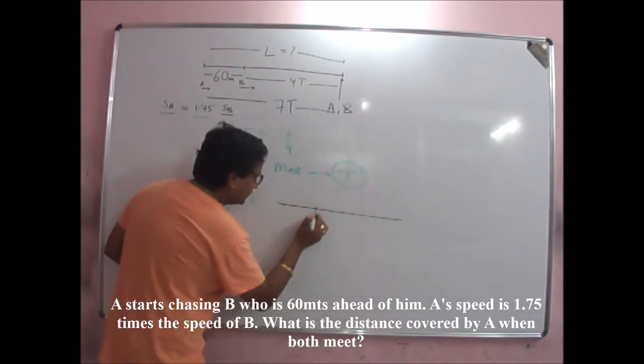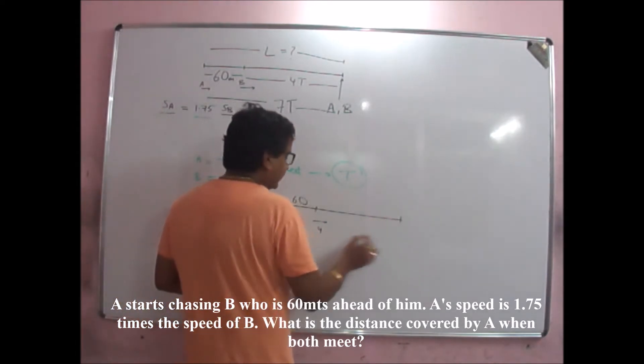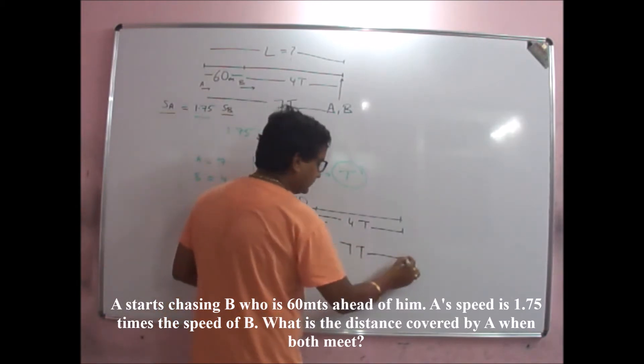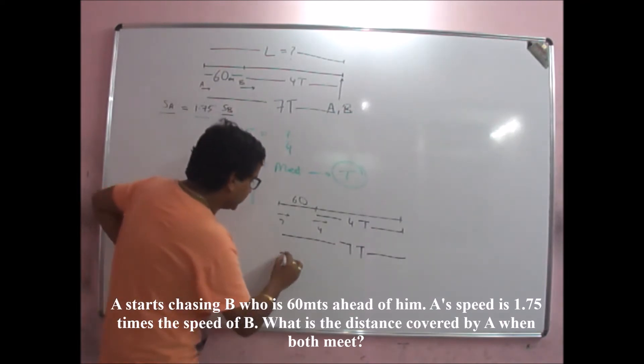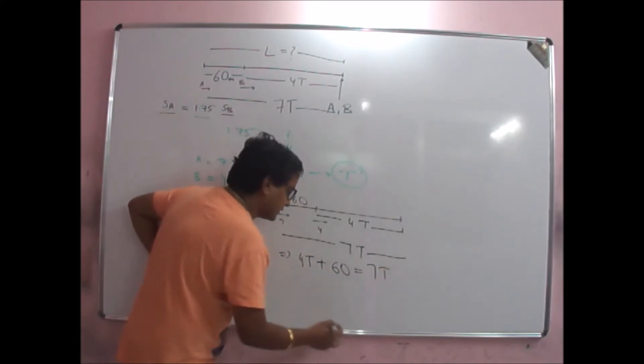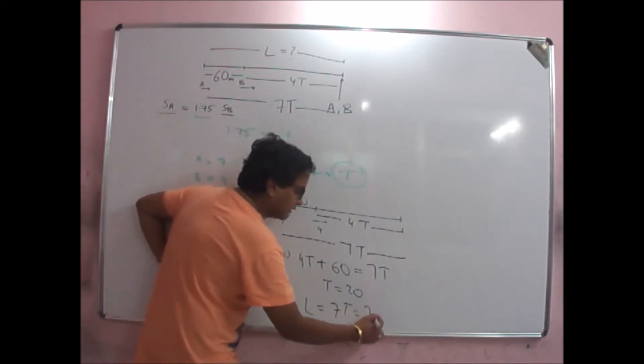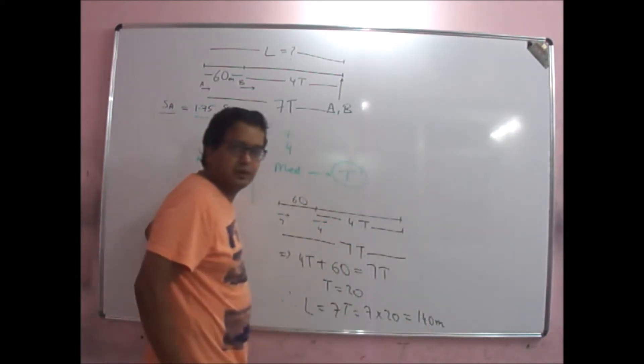Because see, look at this diagram. This difference is 60, we are assuming this is 7 here, this is 4 here when they meet. So the equation becomes 4t plus 60 is equal to 7t, t is equal to 20, which implies L which is equal to 7t is equal to 140 meters.